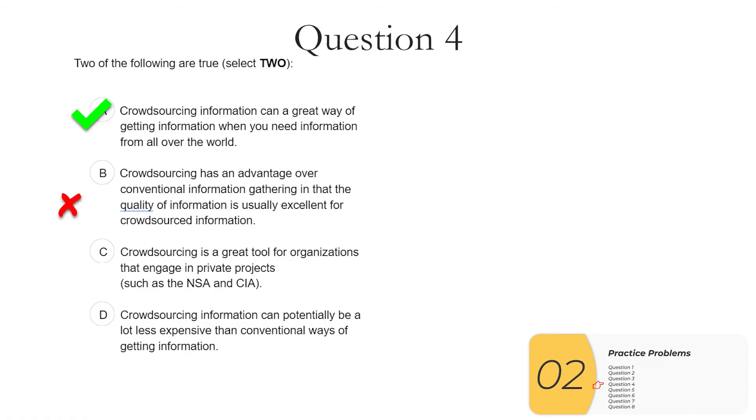B, crowdsourcing has an advantage over conventional information gathering and as a quality of information is usually excellent. This is definitely not true. It is a big disadvantage of crowdsourcing information. You're having regular people get your information for you, not trained scientists, not trained information gatherers. So B is not true.